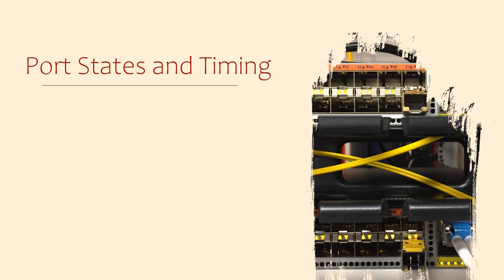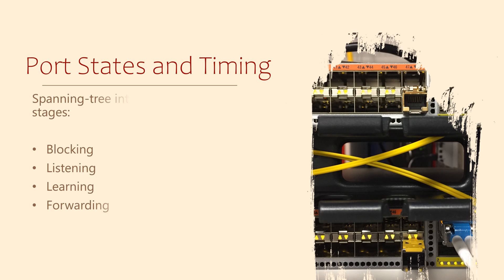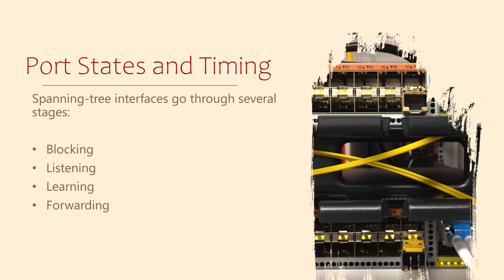You might be wondering whether we have broadcast storms during the time it takes Spanning Tree to find and handle loops. Spanning Tree has a trick for this. The process of assigning a path cost and port roles happens when the interface first comes online — whether that's when powering up a switch, plugging in a cable, or enabling a port. When the interface comes online, Spanning Tree goes through a few steps. In the original version, these are known as: blocking, listening, learning, and forwarding.